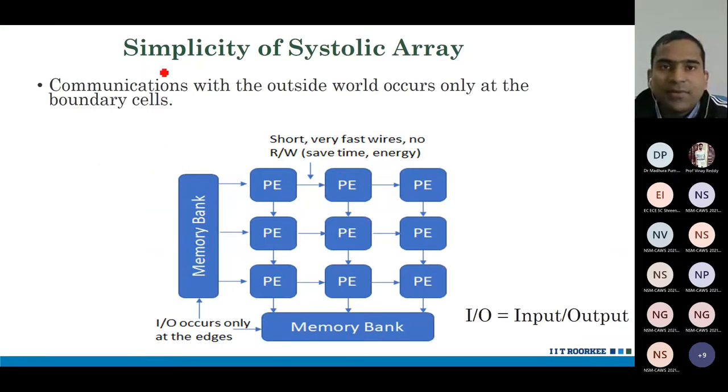What are the benefits of systolic array? Here, the communications with the outside board occurs only at the boundary cells. Other connections are very efficient. These connections are very efficient. IO occurs only at the edge. Here, we read it. Here, we write it. These wires become short, very fast. There is no read-write which saves time and energy.